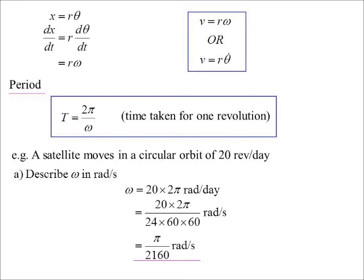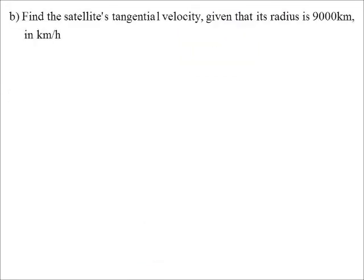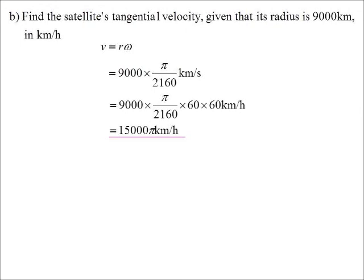I mean, 3.14 divided by 2,160. Every second it's not moving much at all. However, it is actually moving very fast when you take into account the radius that it's travelling at. Because the satellite would be out, say, 9,000 kilometres from the centre of motion. We change it into kilometres per hour. Well, velocity is equal to r times omega. So I get 9,000 times π/2,160. That's kilometres per second. We would end up with 15,000π kilometres per hour.